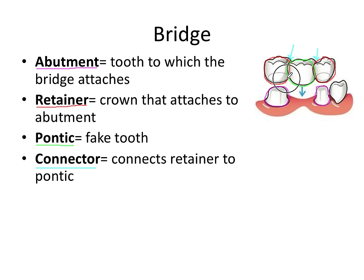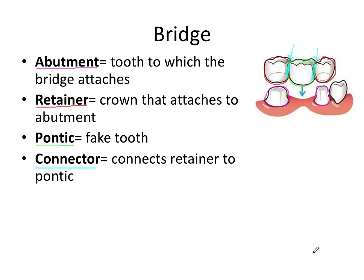Depending on the material used for the bridge, the components can be connected and fixed together — if it's all one ceramic piece, or a metal framework that has been welded together. These are what we refer to as connectors, and you can see them in this image. That's the basic anatomy for a dental bridge, and some of these terms will appear as we go through different considerations for prosthodontics.